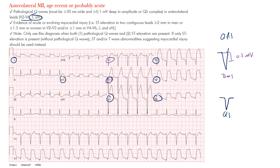Looking at the EKG, you can see R waves in V1, V2, V3, and possibly V4, but they're significant especially in the setting of ST segment elevations. The next thing to look at is ST elevation, which must be present in two contiguous leads — two leads side by side in a location that localizes the injury.